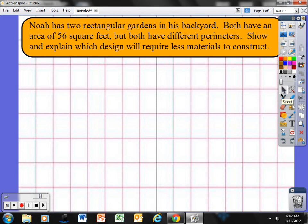I've been very pleased with results so far, but we can always do a little bit better by implementing some strategies we've been talking about all year. So if I take a look at this problem, first thing to do is: Noah has two rectangular gardens in his backyard, both have an area of 56 square feet, but both have different perimeters. Show and explain which design required less materials to construct. He has two rectangular gardens, so I have to make two drawings here, and they're both rectangles.